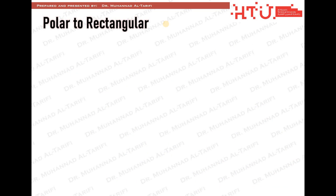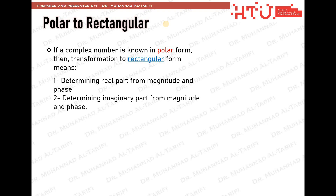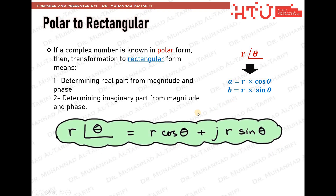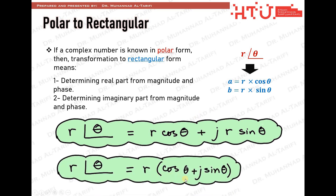Assume now that we know the complex number in polar form and wish to transform it to rectangular form. We need to calculate the real and imaginary parts from the magnitude and the phase angle — this is simple trigonometry. The real part is the magnitude times cosine of the angle, and the imaginary part is the magnitude times sine of the angle. So if r at the phase of theta is the polar form, then A equals r cosine theta and B equals r sine theta. In other words, r at the phase of theta equals r times the quantity cosine theta plus j sine theta.